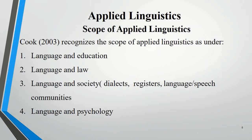Cook defines the scope of applied linguistics across four areas: first, language and education; second, language and law; third, language and society; and fourth, language and psychology. Under language and society, there are subtypes including dialects, registers, language and speech community. Applied linguistics is not limited to these areas — it has wide scope, with language as its basic component.